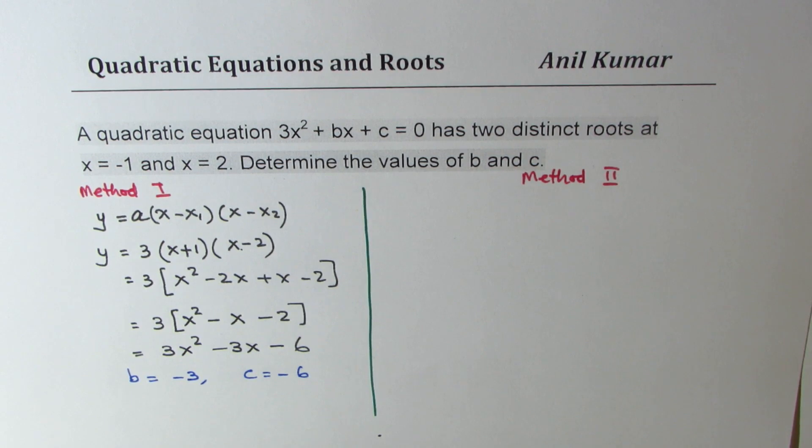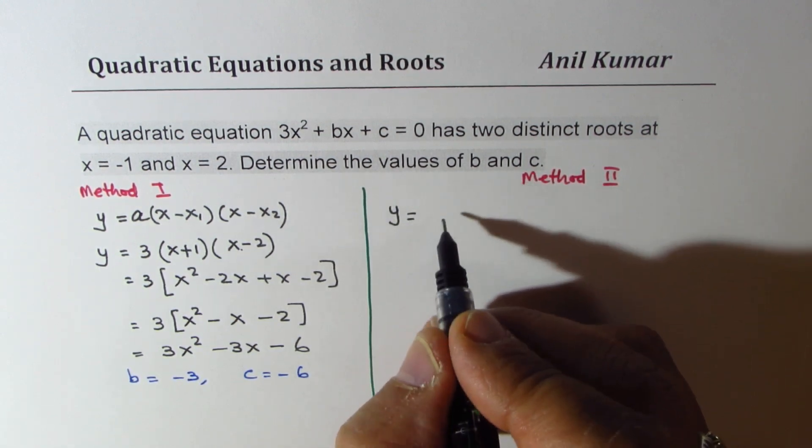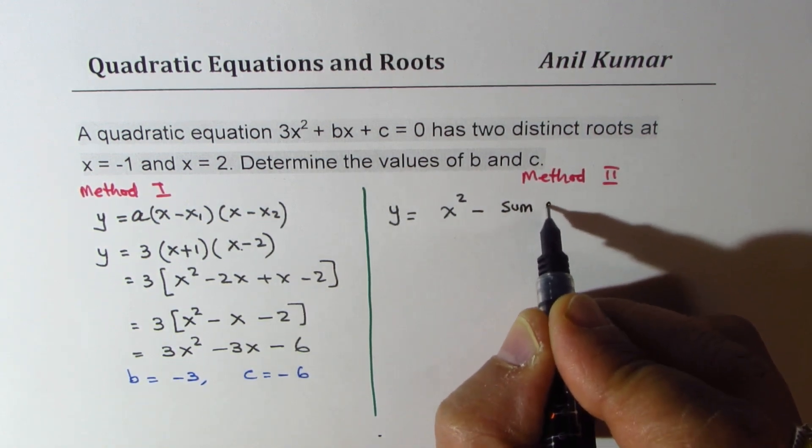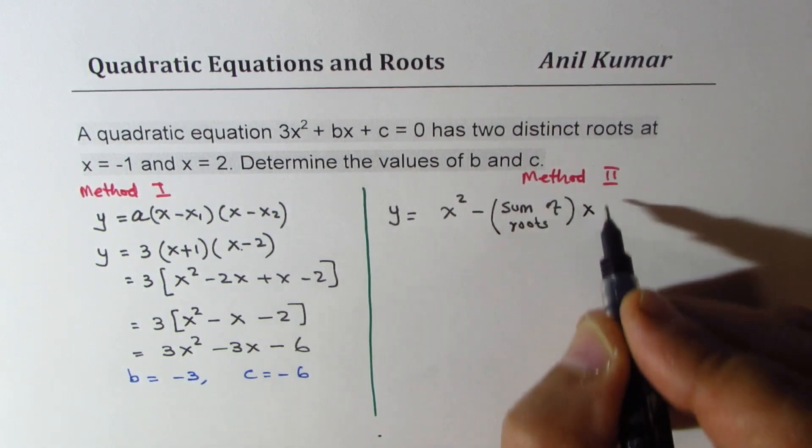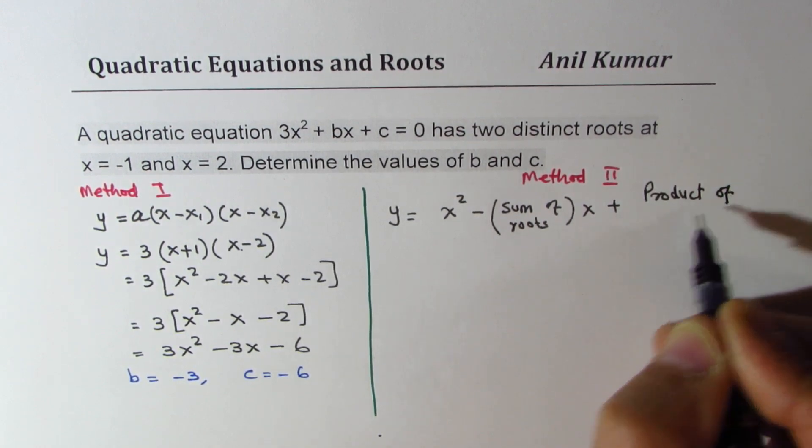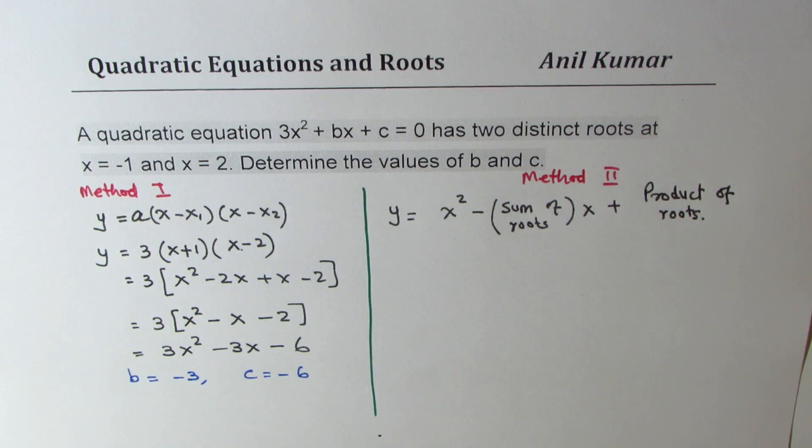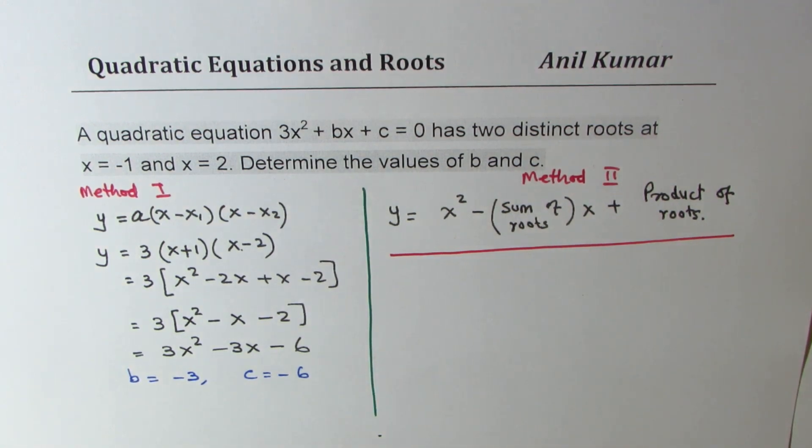Now, here is a quicker way to do the same thing. And that is to understand that we could write also quadratic equation as y equals x squared minus sum of roots times x plus product of roots. Now, all factoring you have done using this concept. So I hope this concept is clear to you. Very important concept.